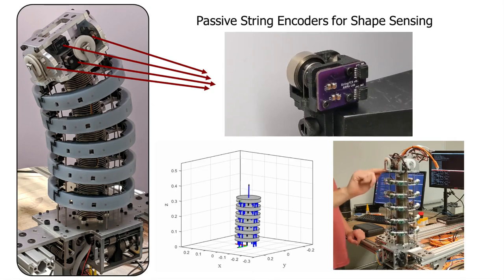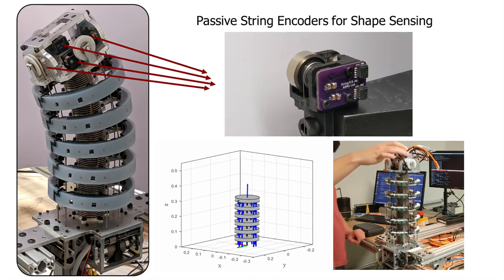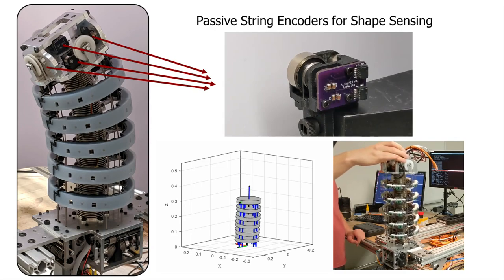In this paper, we investigate the use of string encoders mounted within the robot to sense deflections and update the robot's kinematic model.